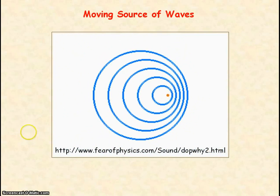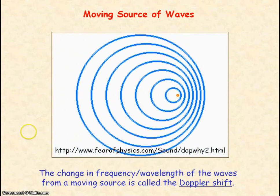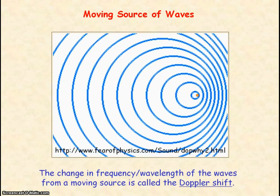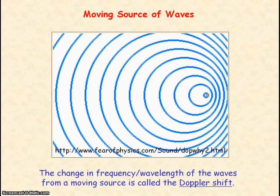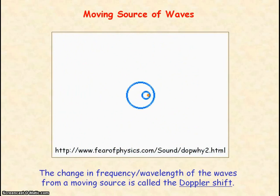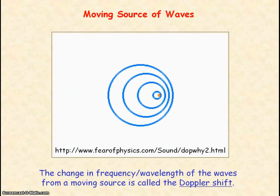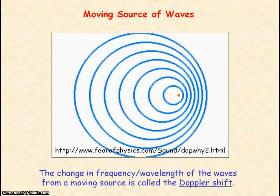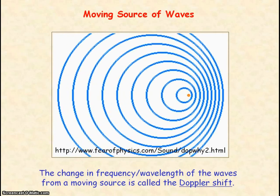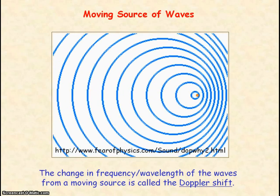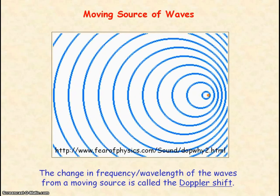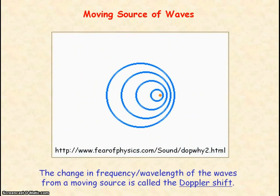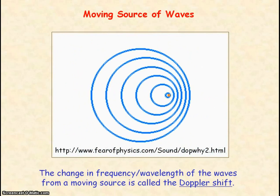This change in frequency or wavelength of the waves between a source and observer that are moving relative to each other is called a Doppler shift.